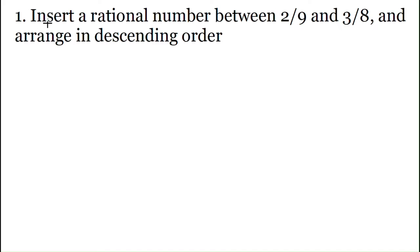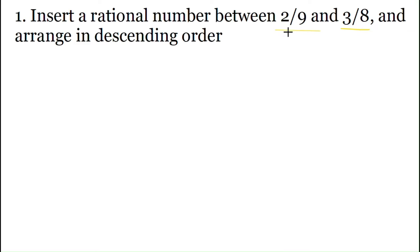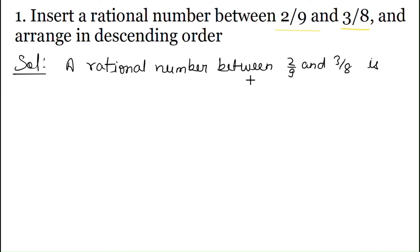Question No. 1 is: Insert a rational number between 2/9 and 3/8 and arrange in descending order. We need to find just one rational number between 2/9 and 3/8 and arrange them in descending order. This is very easy — if we need to find one, we can simply add both and divide by 2.